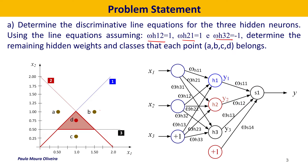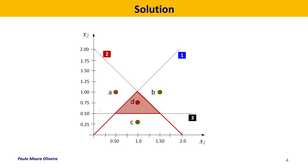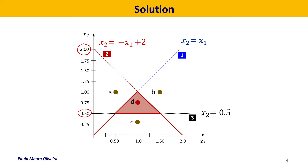The first thing to do is determine the line equations. For neuron one, we can see that x2 is equal to x1, because the slope is one. For the second neuron, the y-intercept is two and the slope is minus one, so x2 equals minus x1 plus two. Finally, for the third line, since the value is constant at 0.5, x2 equals 0.5. So we have the three line equations, each one for each hidden neuron.